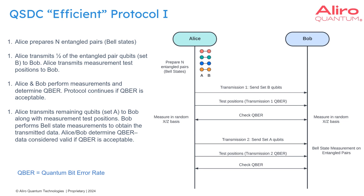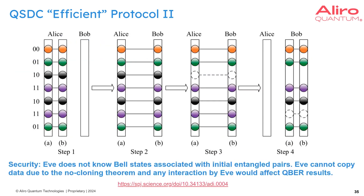If the first-round quantum bit error rate is acceptable, Alice transmits the second set to Bob along with some test positions, performing another test on a subset of the data. If the second-round quantum bit error rate is also acceptable, Bob performs a Bell state measurement to decode which Bell state each pair was, thereby decoding Alice's data. Bob has then securely received the information Alice encoded, with the quantum bit error rate checks verifying no adversary interaction.